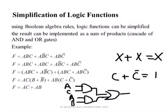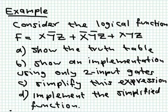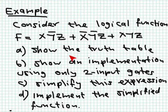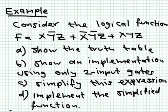Now we have only two two-input gates needed, and this logic function can be implemented with an AND gate for ac and another AND gate for ab, then OR'd together. This was simplification using rules of Boolean algebra. Sometimes the expression is more complicated and we need another means. Let's take a look at another example: f equals xy̅z plus x̅y̅z plus xyz. We'd like to put the truth table of this function, show an implementation using only two-input gates, simplify the expression, and then implement the simplified function.